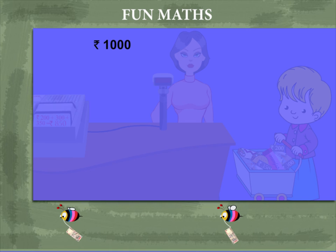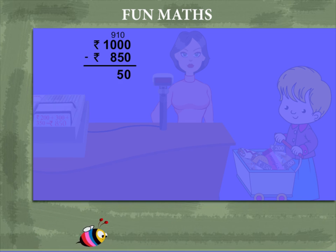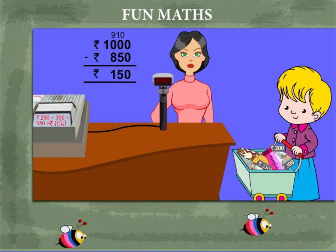How much does she get back? Simple. 1000 minus 850 is rupees 150. That was fun Rinki.